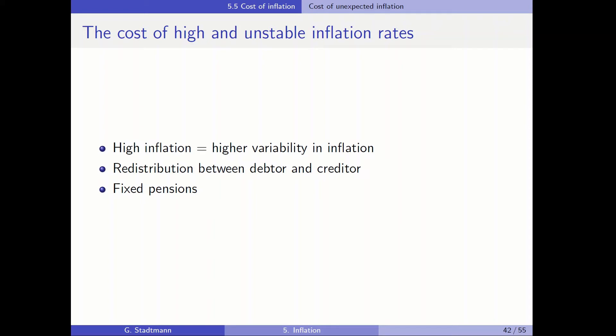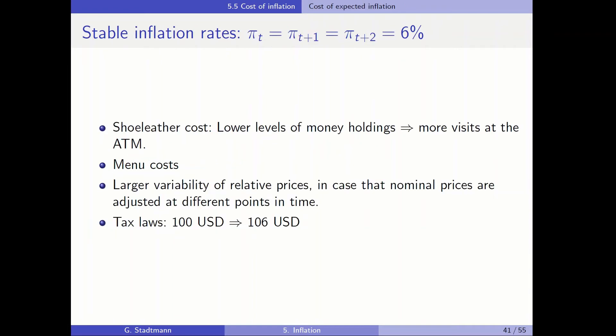And then of course this higher variability leads to a redistribution between the debtor and the creditor. Like a person who is saving money and a person who is borrowing money, they are not able to use a stable situation to base their expectations on, and hence it will lead to redistributions between these two parties. Also when the pension payments are fixed and not adjusted to these high inflation rates, then of course also the real value of a pension will deteriorate over time.